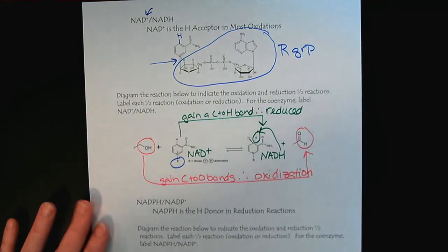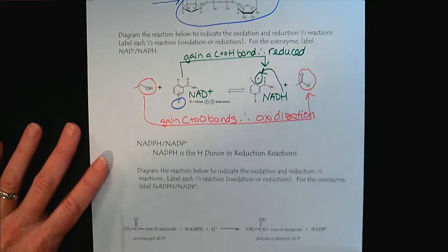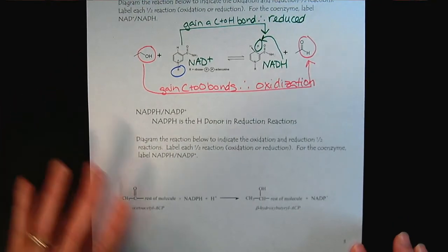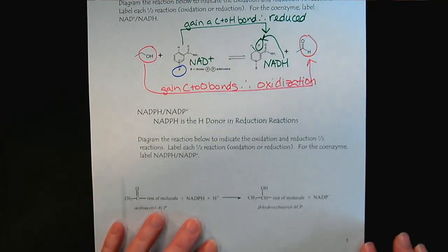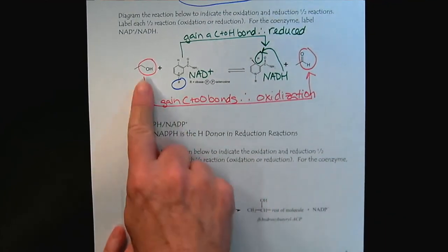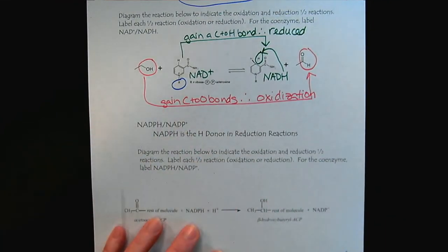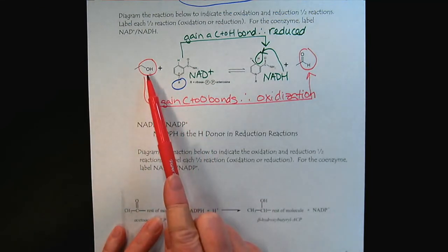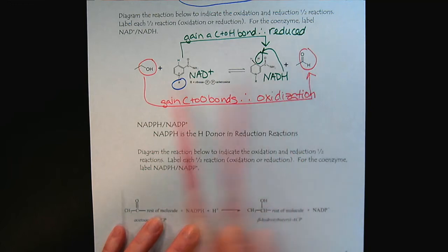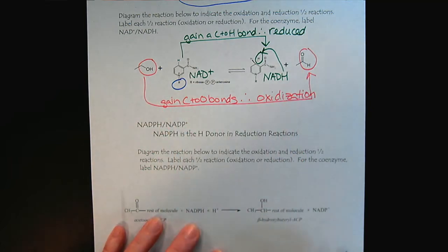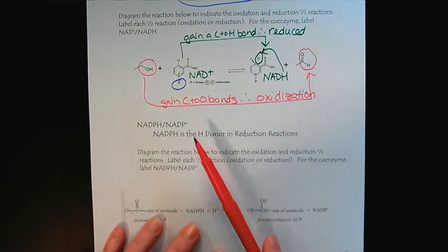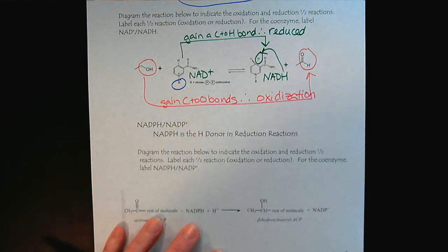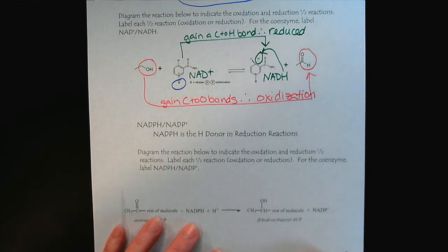We'll briefly go through the last major coenzyme. One last comment on NAD+: FAD is for double bonds, while NAD+ is associated with carbonyl formation from oxidations. So pretty much, if it doesn't involve a carbon-carbon double bond, then we'll see NAD+ instead of FAD.